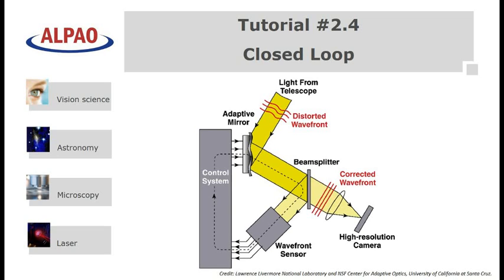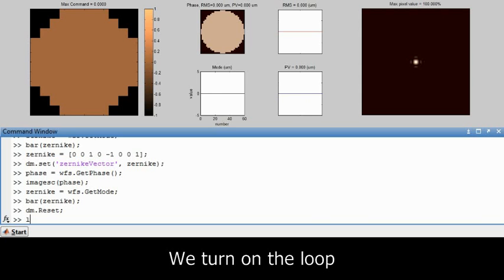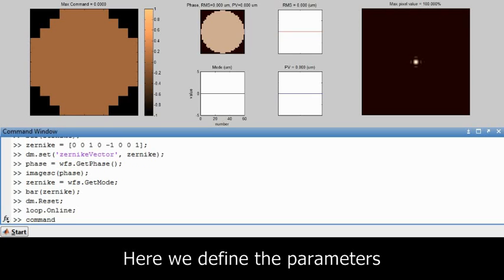Next we will look at combining all three elements in the closed loop. We turn on the loop. Here we define the parameters which are used to measure the influence matrix.